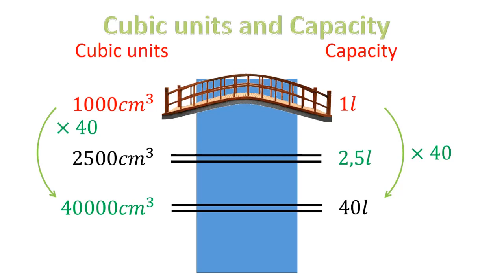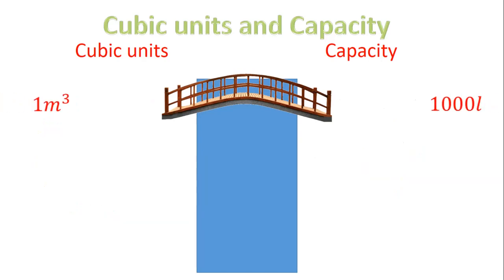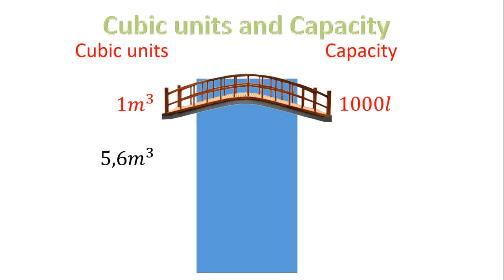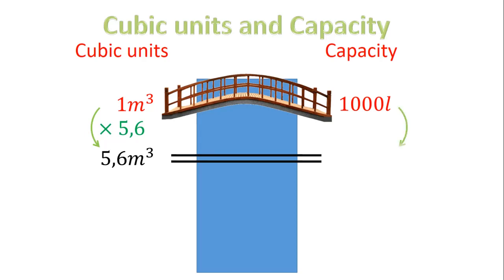Forty liters is equal to forty thousand centimeters cubed. Let's look at our last bridge. One meter cubed is equal to a thousand liters. So if I have five comma six meters cubed and I want to know how many liters that is, to go from one to five comma six I times by five comma six. On the right-hand side, I take a thousand, times by five comma six, and that gives me five thousand six hundred liters. In other words, five comma six meters cubed is five thousand six hundred liters.